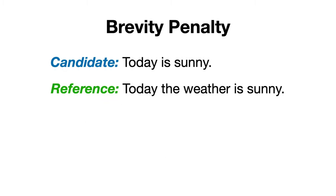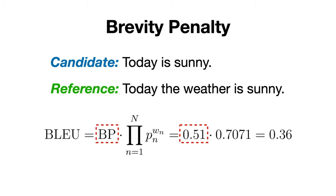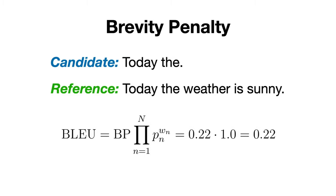Putting this into numbers, for our initial example, we would get a brevity penalty of 0.51 and, when we multiply it with the BLEU score that we have obtained for this example, we would get 0.36. And, for the second example, where we predicted only the words 'today the,' we would get an even stronger brevity penalty of 0.22.